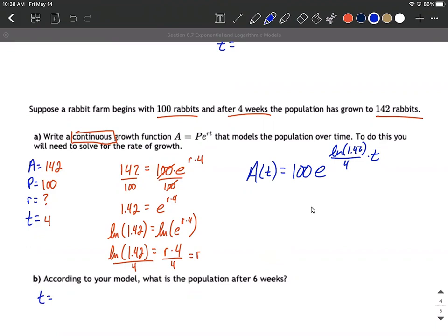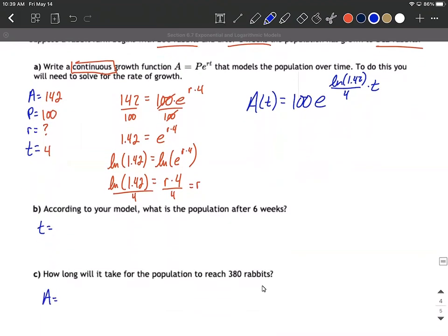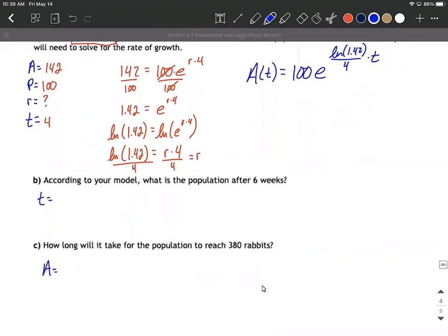Okay according to our model let's follow this up by actually filling in six weeks into the future, how many rabbits are we going to have. So going to our model we're going to plug in six and it's staying consistent, this was four weeks, this is six weeks so our units are staying consistent along the way. So we can say A of six is going to be 100 e raised to the natural log of 1.42 divided by 4 times 6. And again all this is up in the exponents so be careful as you punch this into your calculator. I got this to be about 213 rabbits.